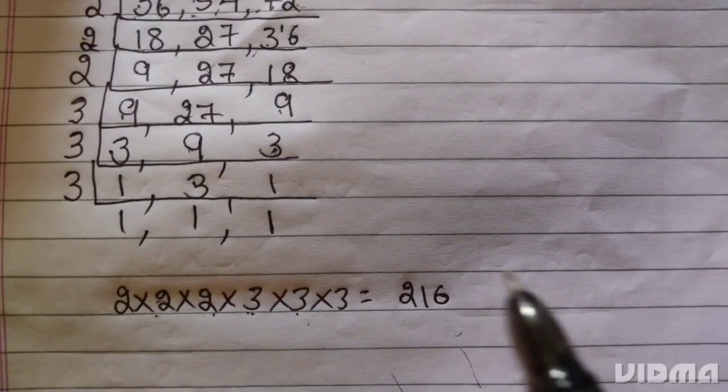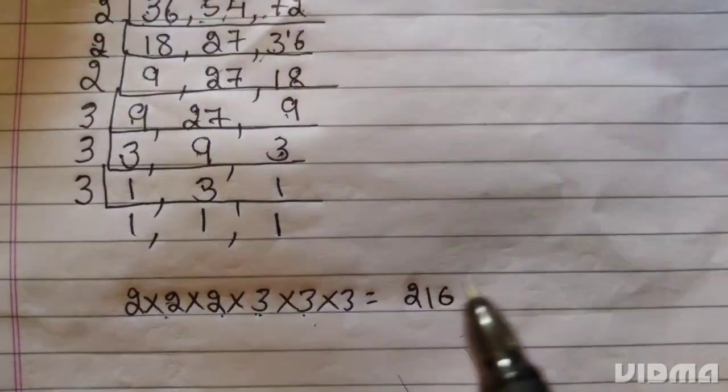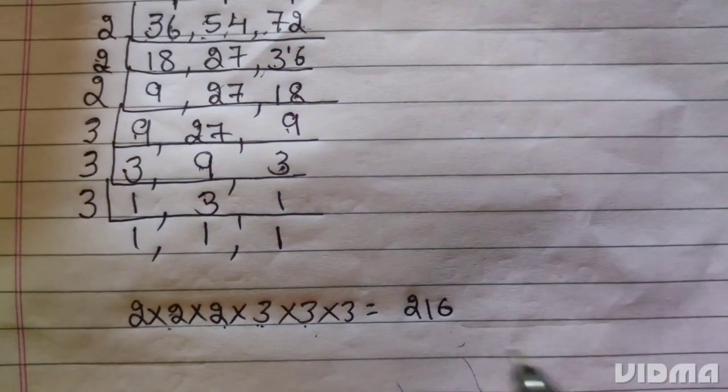LCM of 36, 54, and 72 is 216. If you like this video, don't forget to like and subscribe.